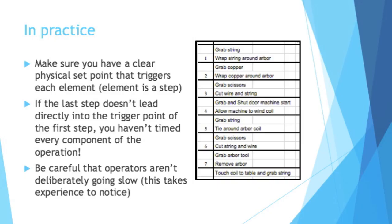Double check your observations. Also be careful that the operators — the people you're timing, whether in manufacturing or in the service industry — aren't deliberately going slow. This does take some experience. If you're new at the place you're working or haven't done many time studies, you might not be able to tell if they're going slow. So maybe ask a supervisor or come back at multiple times. Hopefully they wouldn't fake it every single time you're around, and hopefully the culture of where you work doesn't encourage that.